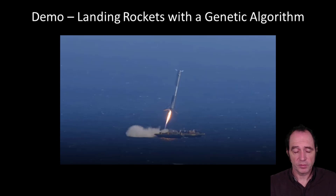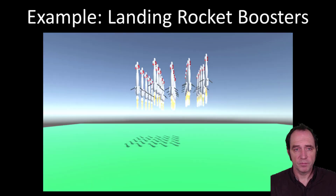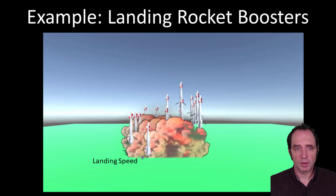Let's look at evolutionary learning in action. This scenario is similar to the lunar landing scenario — we're landing rocket boosters in a simplified version of the SpaceX scenario. For the environment, I'm using Unity, a game development environment with a fairly good physics engine. The state is the altitude, speed, and remaining fuel of the rocket. The action we can take is the amount of thrust from the rocket engine, which burns fuel and reduces mass. The reward will be the landing speed, and the aim is to make this value as small as possible.